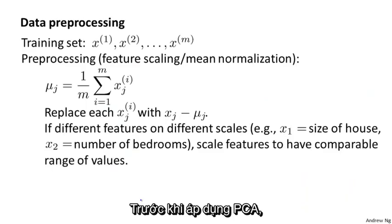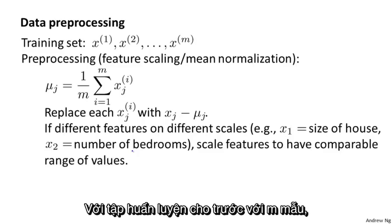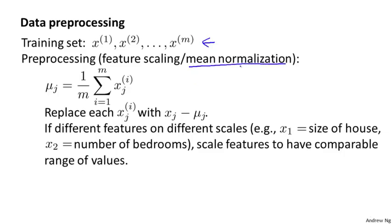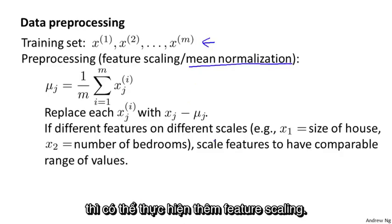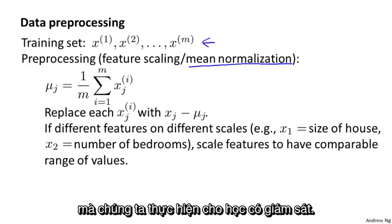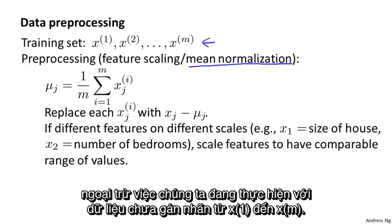Before applying PCA, there's a data pre-processing step which you should always take. Given a training set of m unlabeled examples, it's important to always perform mean normalization, and then depending on your data, maybe perform feature scaling as well. This is very similar to the mean normalization and feature scaling process we had for supervised learning — in fact, it's exactly the same procedure, except we're doing it now to our unlabeled data x1 through xm.